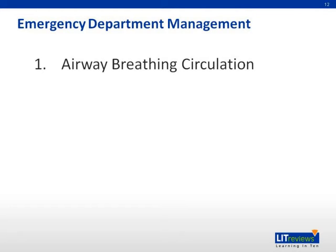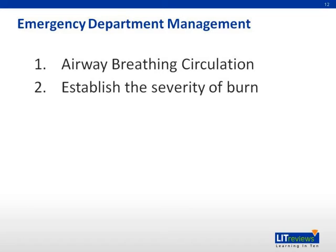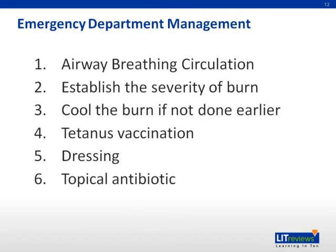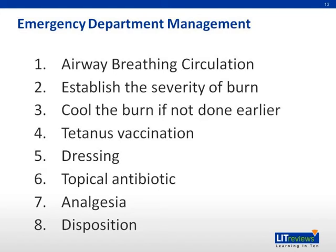Now we move on to management in the emergency department. First, stabilize the patient's airway, breathing, and circulation. It is necessary to intubate the patient if airway compromise is expected. For circumferential burns of the chest, an escharotomy may be required. Intravenous fluids are also administered early as shock may ensue. Establishing the severity of the burn will allow us to decide on the appropriate disposition. Cool the burn if not done earlier, and administer tetanus vaccination if not up to date. Dress the burn — cover all partial thickness burns with antibiotic ointment such as silver sulfadiazine. Whether or not to debride intact blisters is controversial, but it would be logical to do so for blisters located in areas at high risk for rupture. Provide adequate analgesia and decide on the best disposition based on the patient's severity.